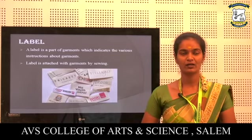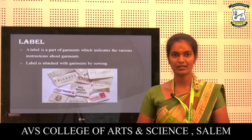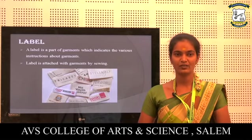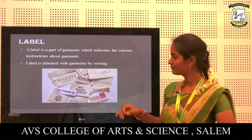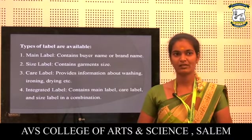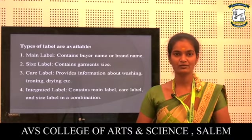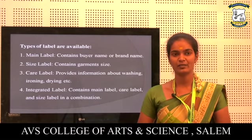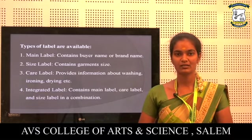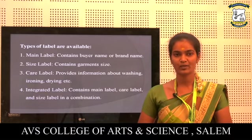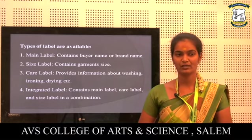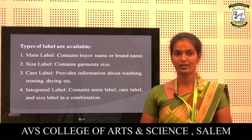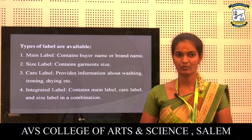Now we can see about label. Label is a part of garment which indicates the various instructions about garments. Label is attached with garments by using sewing. There are 4 types of labels available. Main label contains buyer's name or brand name. Size label contains garment size. Care label provides information about washing, ironing, drying, etc. Integrated label contains main label, care label and size label in a combination.